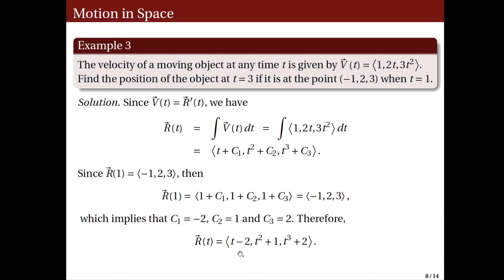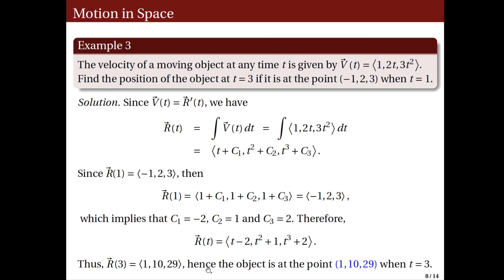We have computed the position function for any given time t. Finally, the problem asks for the position at t equals 3. Evaluating r of 3: (3 minus 2, 9 plus 1, 27 plus 2) equals (1, 10, 29). Hence, the object is at the point (1, 10, 29) when t equals 3. This ends the first part of this lecture. Please make sure to watch the second part where we discuss more about the acceleration. Thank you all for listening.